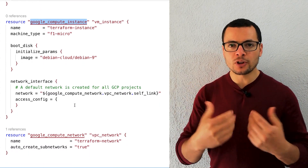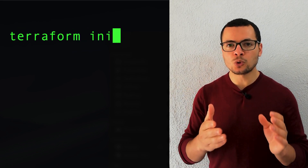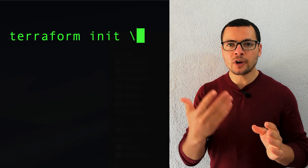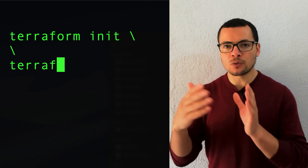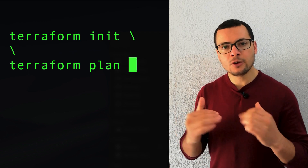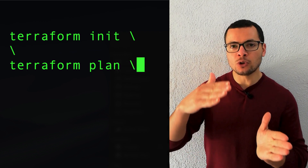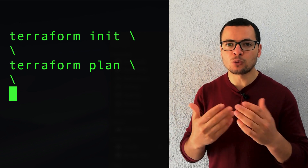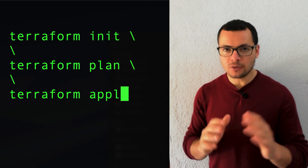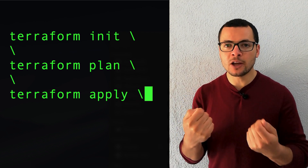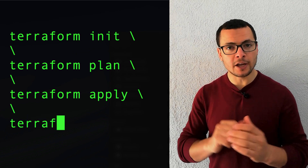For that, we'll explore the different Terraform commands like Terraform init, to download the provider needed to communicate with the REST API of the Google Cloud Platform. Then we'll use Terraform plan, which will give us an overview of the changes that will be applied to the GCP Cloud. After that, when we are ready to apply those changes, we can apply them using the command Terraform apply.